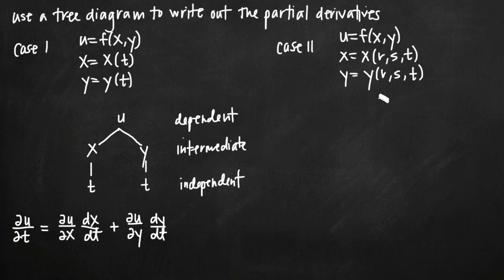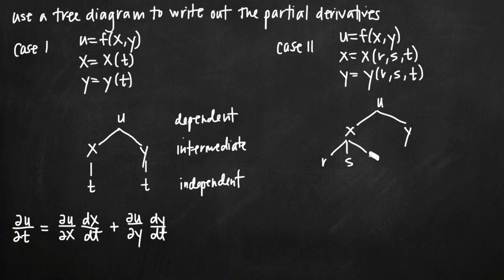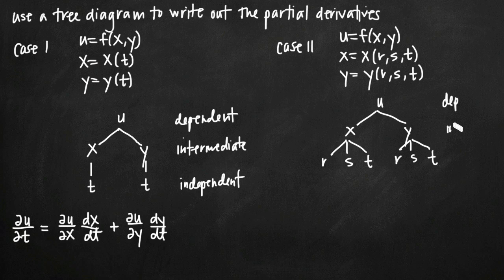Again, we'll use a tree diagram to outline this. We'll say u is in terms of x and y. Then x is in terms of r, s, and t — so we'll draw a tree where x branches to r, s, and t. y is also in terms of r, s, and t, so we'll add those same three branches off of y. Now we have one dependent variable going through two intermediate variables to reach three independent variables.